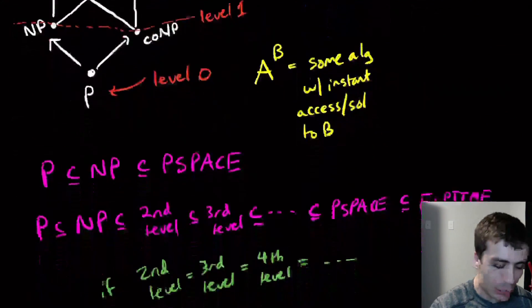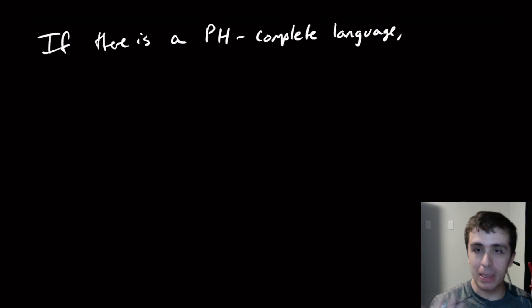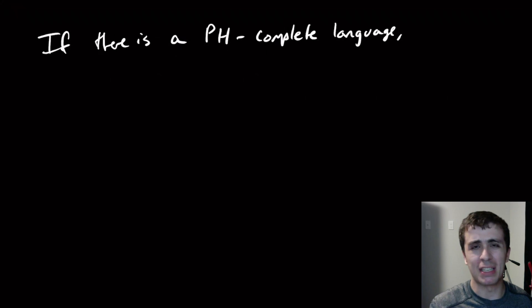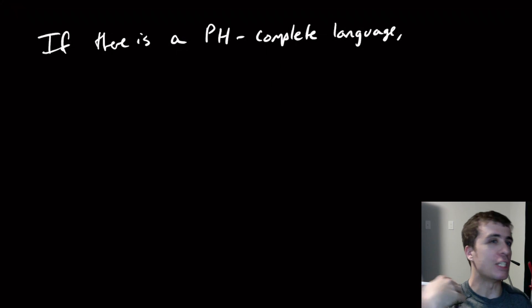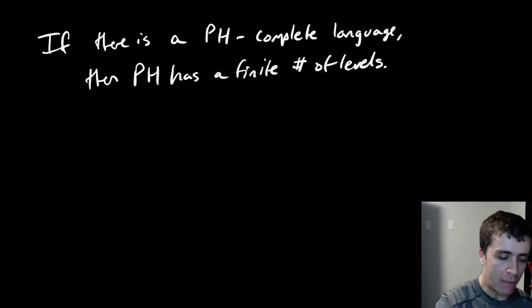I want to prove something interesting about the polynomial hierarchy. We have PSPACE-completeness and NP-completeness — is there a polynomial hierarchy completeness? It turns out no, or at least we don't believe there to be. For completeness in PH, you'd need to be in the polynomial hierarchy and have a polytime reduction — just as NP and PSPACE had polytime reductions.